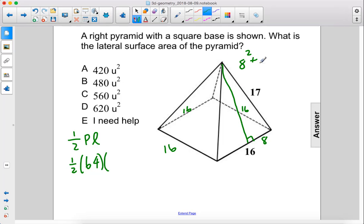We have 8 squared plus L squared, which is this length here, equals 17 squared, and when you solve this we get that L equals 15.